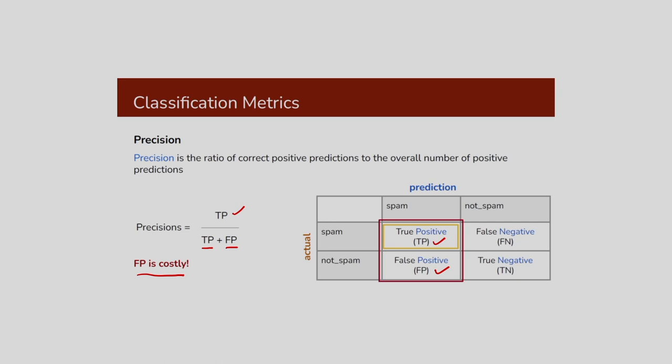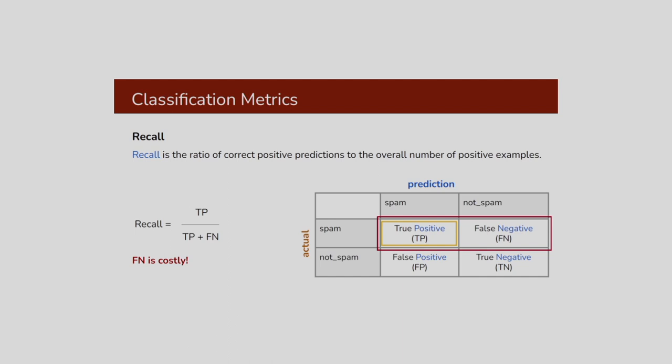Another parameter is recall. Recall is the ratio of correct positive predictions to the overall number of positive examples. The overall number of positive examples is TP + FN, so recall = TP / (TP + FN). In a classification problem, if you give more importance to false negative, then you have to consider this metric — the recall.